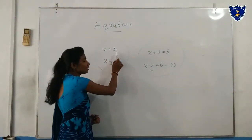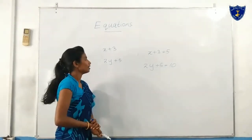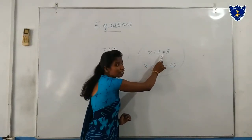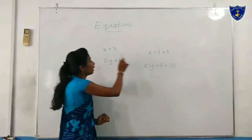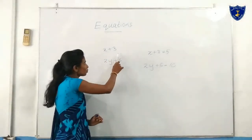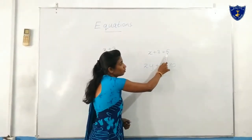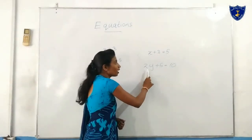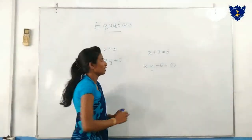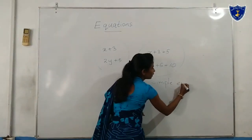x plus 3 is an algebraic expression, as well as 2y plus 5 is also an algebraic expression. Here we can see an equal mark, and here also we can see an equal mark. But in the expressions we cannot see an equal mark. So x plus 3 and 2y plus 5 are algebraic expressions, while x plus 3 equals 5 and 2y plus 5 equals 10 are equations. These two equations we call simple equations.